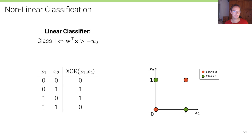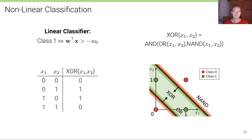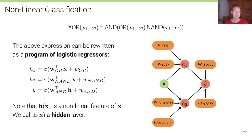Let's look at the XOR problem again. To classify the dataset correctly, we can have one decision boundary for the OR operator and another for the NAND operator, then combine these two to obtain the XOR operation. In formula: XOR(x1, x2) = AND(OR(x1, x2), NAND(x1, x2)). By simply combining these three operations we obtain XOR, and this can also be written as a program of logistic regressors.